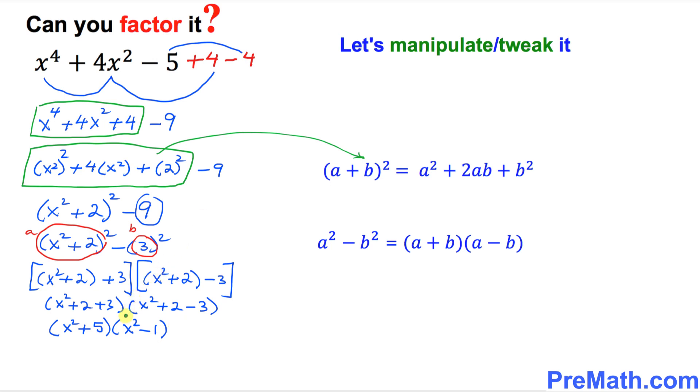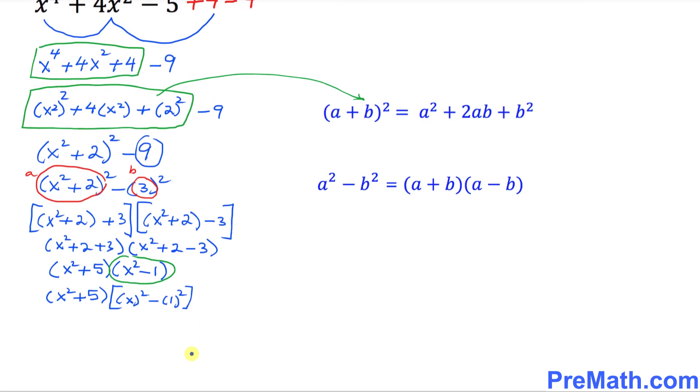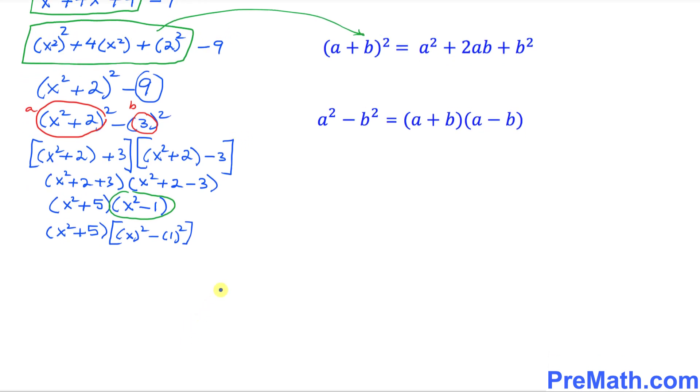Now I want you to focus on this second parentheses. First of all, let me go ahead and write down this first parentheses as x square plus 5. And I can write this one over here x square minus 1 square. So far so good.